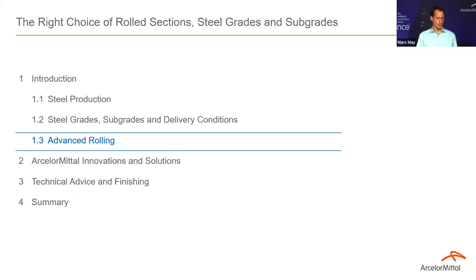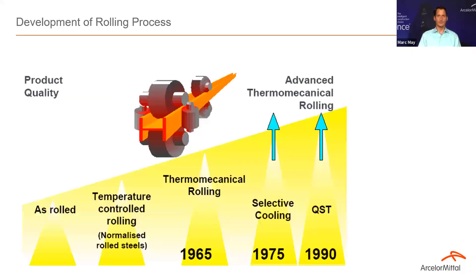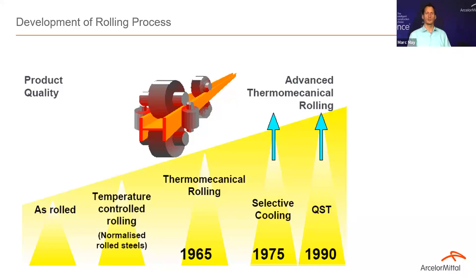Coming to the topic of advanced rolling — here is a timeline of product quality over time. After the war in the 1950s, all steels were produced as-rolled with rather base quality. In the early 1960s, temperature-controlled rolling — today called normalized rolling — was invented, allowing better steel. In the 1960s, thermomechanical rolling was invented, again improving quality. What we call advanced thermomechanical rolling includes selective cooling, invented in the 1970s, and quenching and self-tempering (QST), invented in the 1990s.